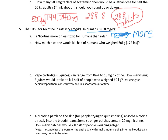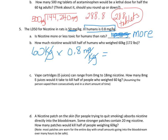Letter B: how much nicotine would kill half the humans weighing 60 kilograms? Take 60 kilograms and multiply by 0.8 milligrams per kilogram — the kilograms cancel — giving 48.0 milligrams. That's not a whole lot. Nicotine is actually highly toxic, which is why people who make vaping solutions are dealing with an extremely toxic substance.